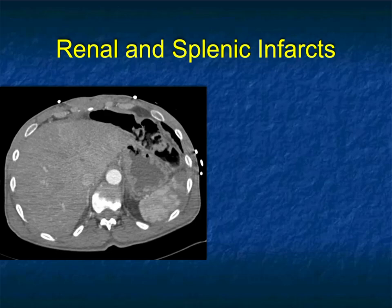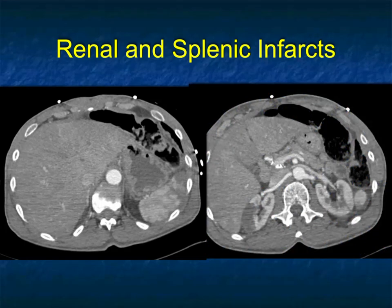It's important to look at other organs. When you have a kidney study, you're always looking at the liver, spleen, nodes, pancreas, bowel, and everything else because diseases often involve more than one organ. When you see splenic infarcts and a well-defined lesion in the patient's right kidney, that lesion is also an infarct — because infarcts often involve multiple areas, particularly when related to IV drug abuse or vasculitis.